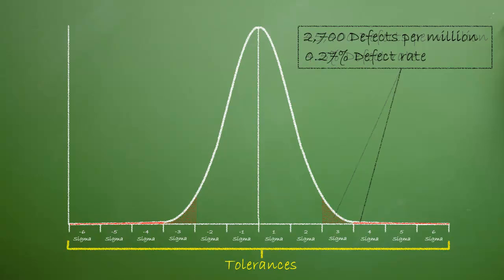However, when processes are tightened up to three Sigmas, the defects drop to around 2,700 per million. This is a defect rate of less than 0.27%.